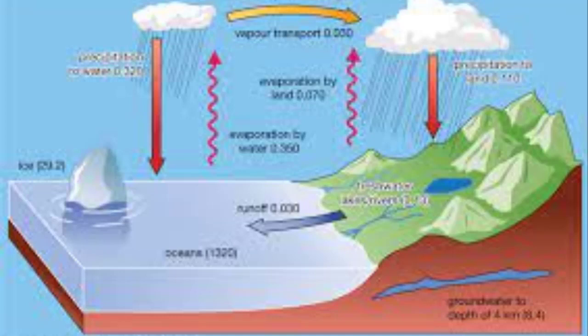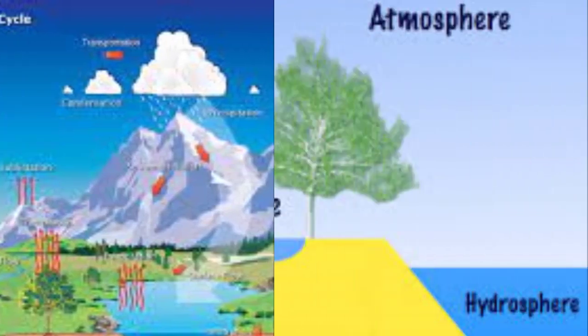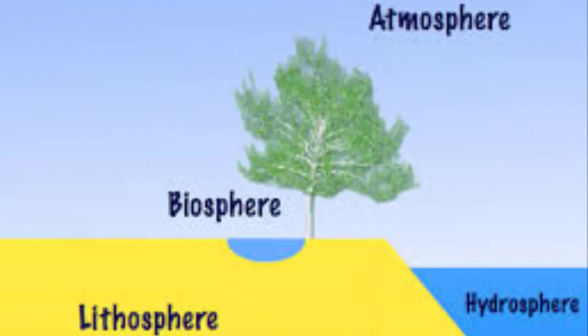Now we will discuss the distribution of water. 97 percent of water is found in oceans and ocean water is salty and we cannot use it promptly. A large portion of water is in the form of ice sheets and glaciers — about 2.97 percent. We have only 0.03 percent water available for use.